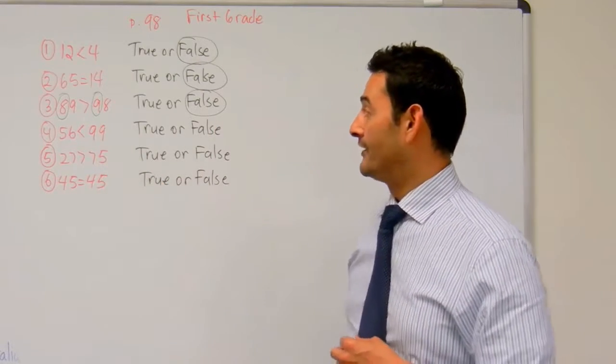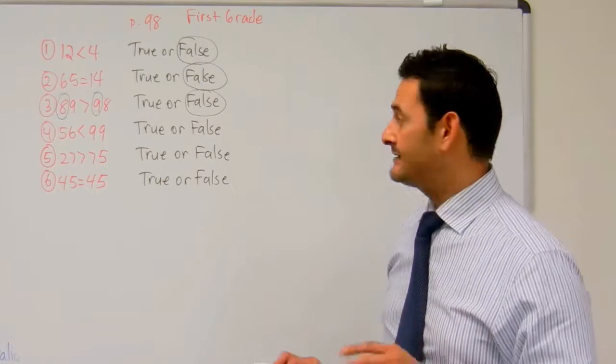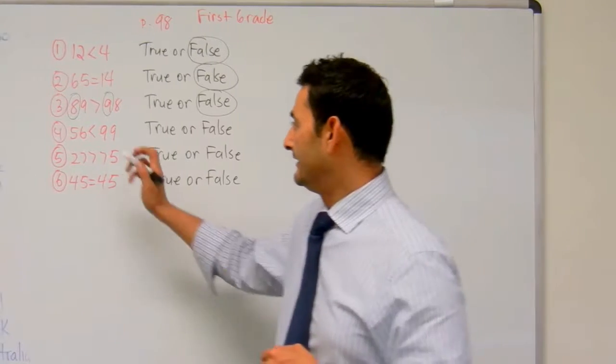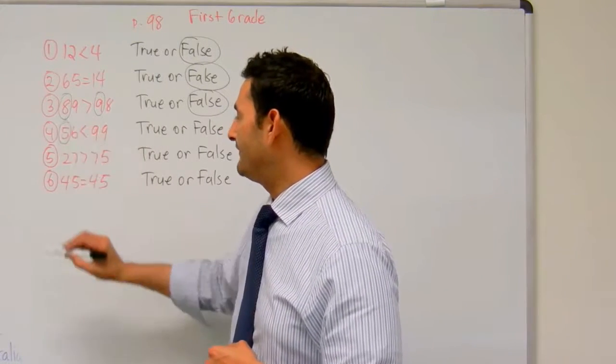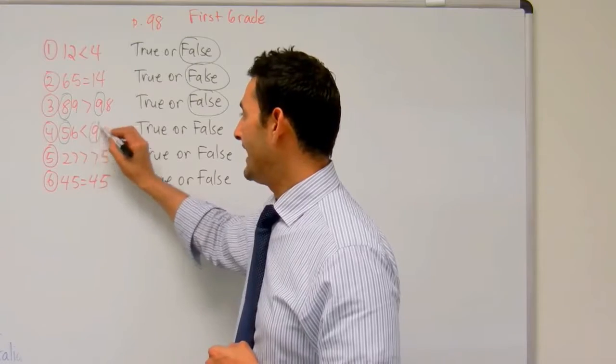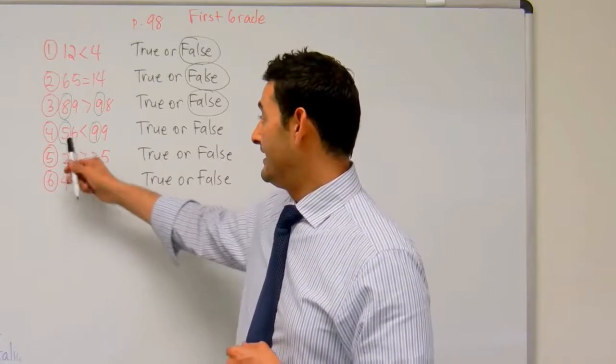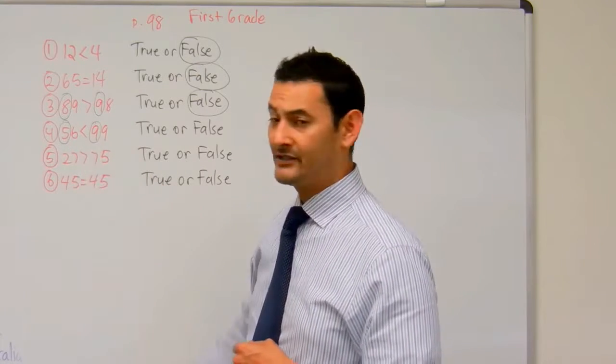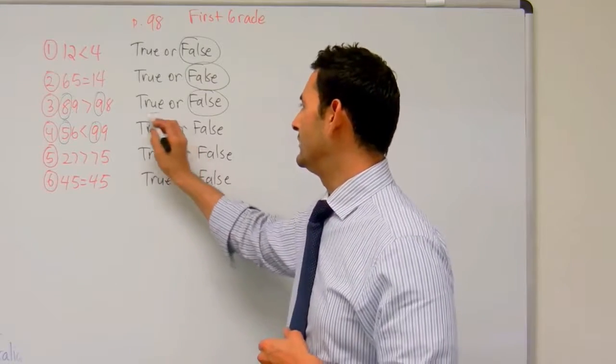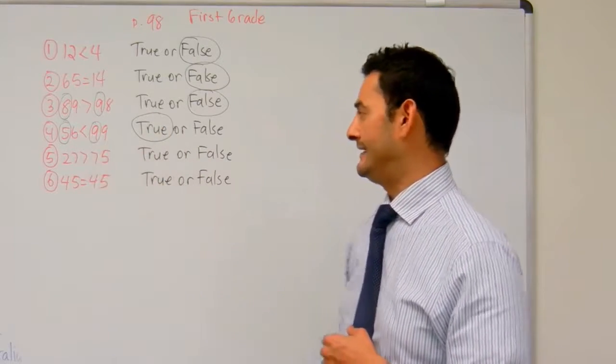Let's take a look at number 4. 56 is less than 99. Let's take a look again. Here I've got 5 bundles of 10. Here I've got 9 bundles of 10. Is 5 bundles less than 9 bundles? Absolutely. So this is going to be true. 56 is less than 99.